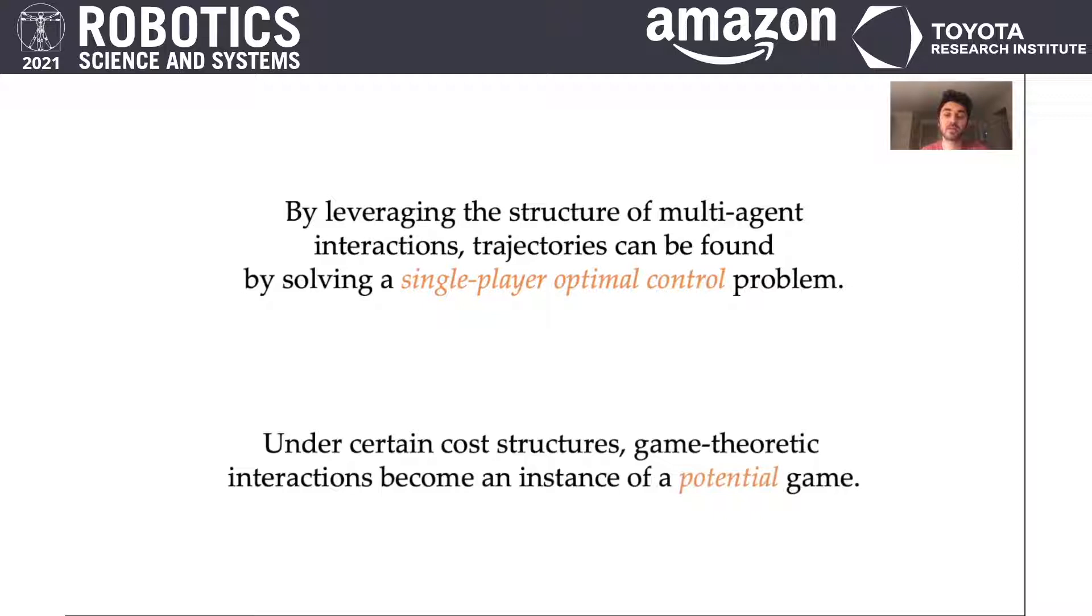Our key insight is that under certain cost structures, game-theoretic interactions become an instance of a potential game where using a potential function, we can solve a single optimal control problem to find the equilibrium of the game.